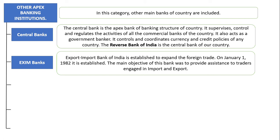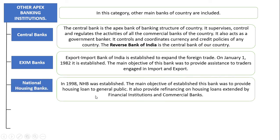The third apex bank is National Housing Bank (NHB), established in 1998. Its main objective is to provide housing loans to the general public — for renovating or purchasing a new home. It also provides refinancing of housing loans extended by financial institutions and commercial banks.